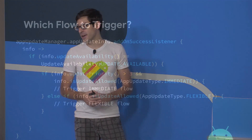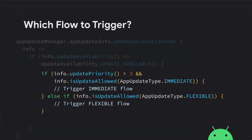In the code snippet: if the update priority is greater than 3, I'm triggering the immediate flow; otherwise, I'm falling back to the flexible flow. The number 3 is purely arbitrary for my app — you can tailor and tweak this value depending on your needs. This is a very simplified decision tree using that signal alone, but you can imagine using it in combination with other signals you already have to make the best decision possible.